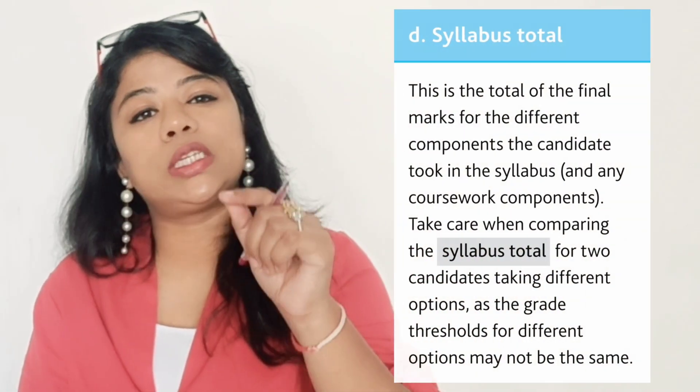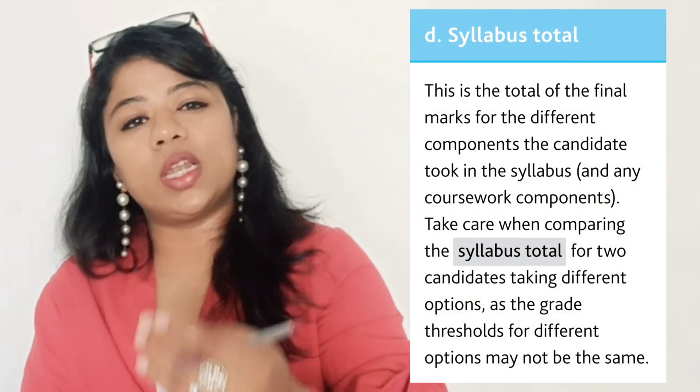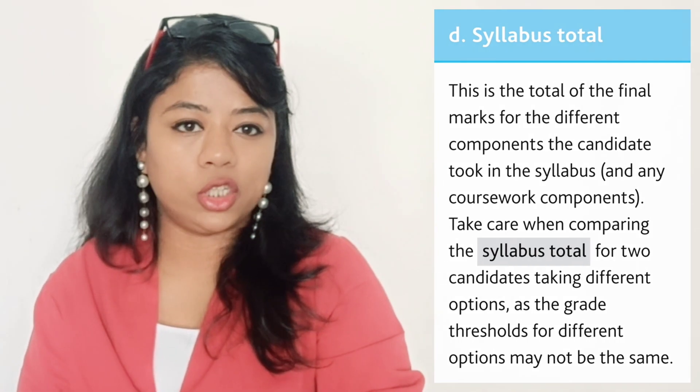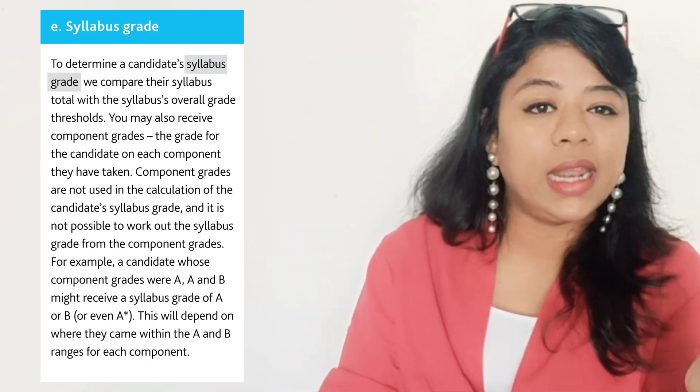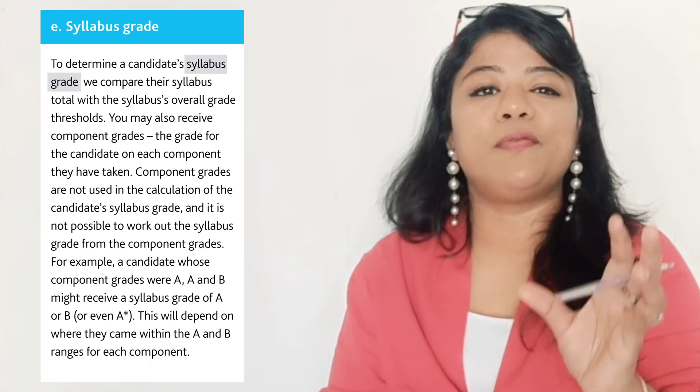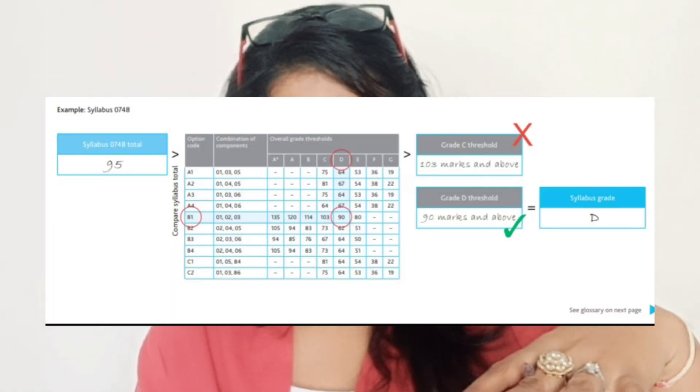After that, the syllabus total is calculated — for example, what is your total score in English or whichever subject you have chosen. That total score is then adjusted and converted to a syllabus grade. The conversion from syllabus score to syllabus grade follows a specific rule that IGCSE adjusts year by year. I hope you are now clear about how IGCSE grades are calculated.